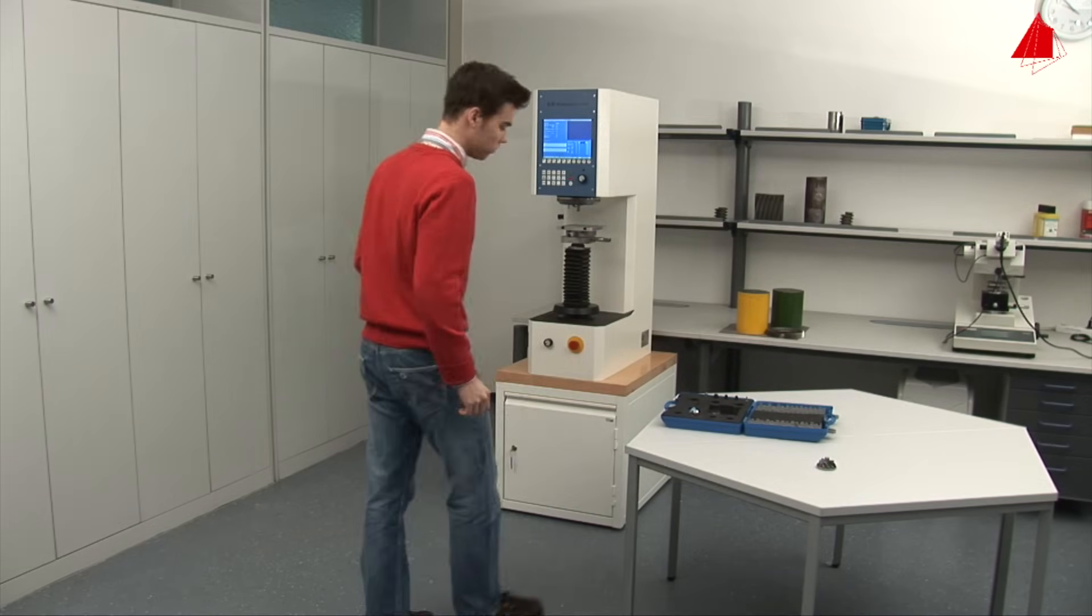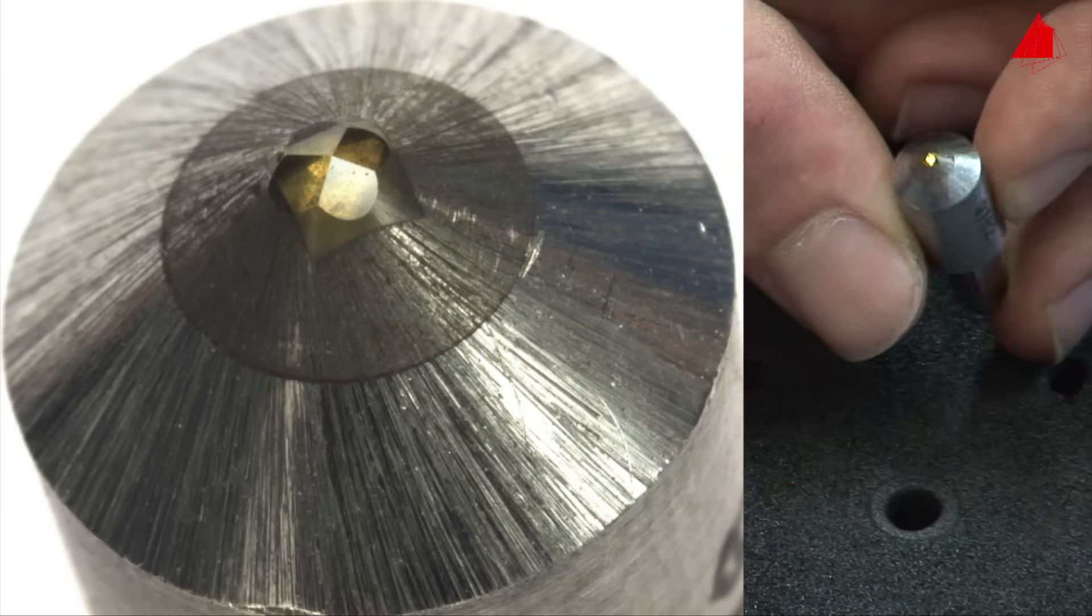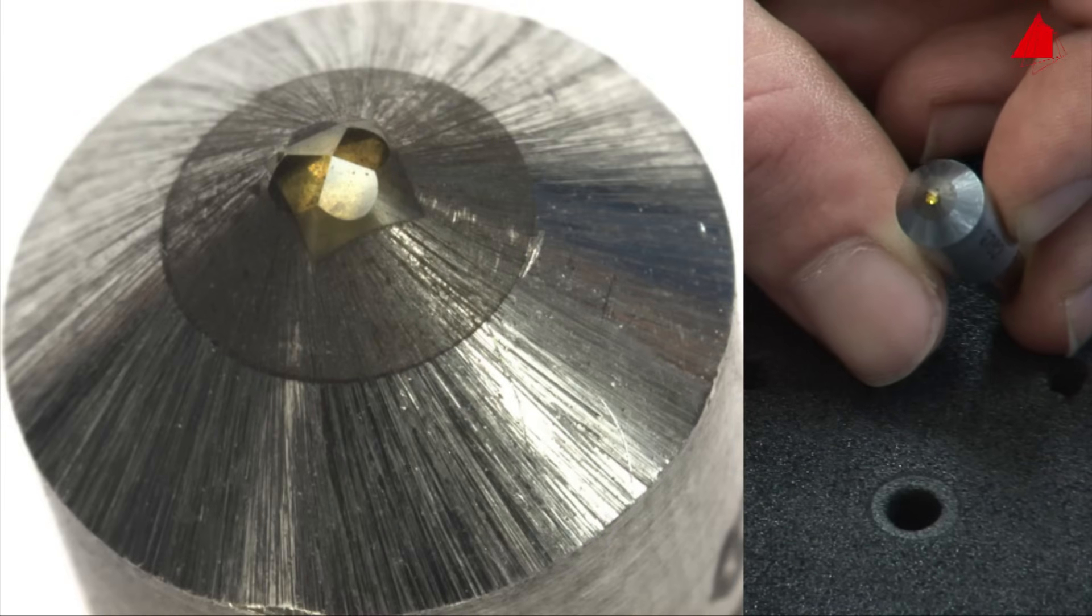First, the tester has to prepare his testing machine. He takes the Vickers indenter with the four-sided pyramid and inserts it into the mounting device of the testing machine.